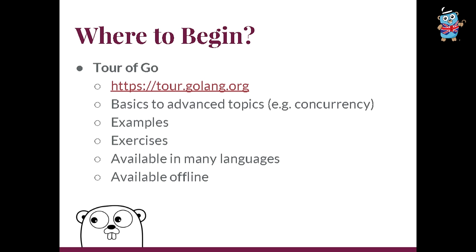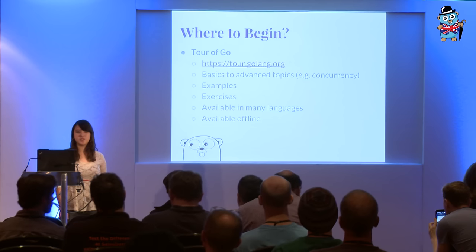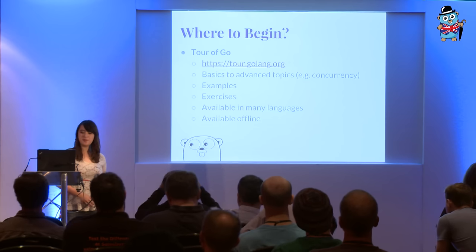For this one it's a for loop — you can just run it, and then if you want to add other print statements, edit the code, you can do that. There are different topics, a bunch of examples, and then afterwards they have exercises. They'll say: how do you code this thing? This is the expected output. You can code it and match it to see if you're doing it correctly. And it's also available in many languages, and you can get it offline as well.